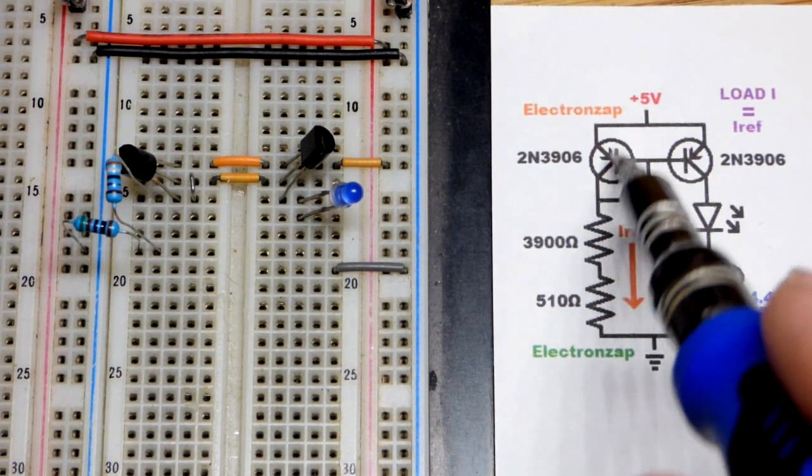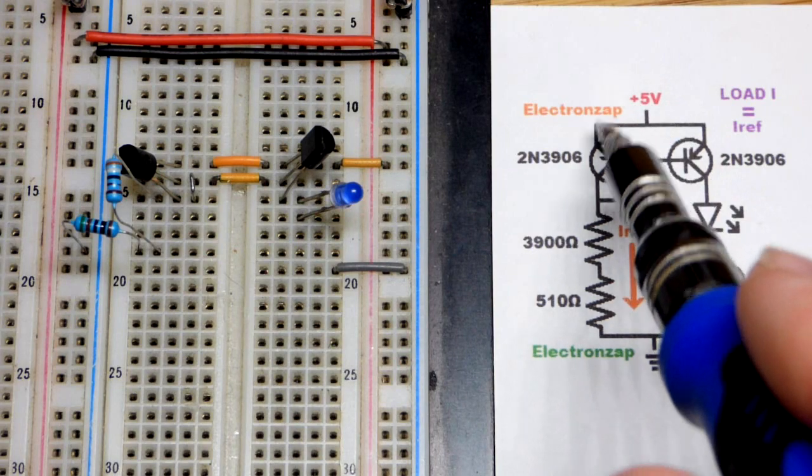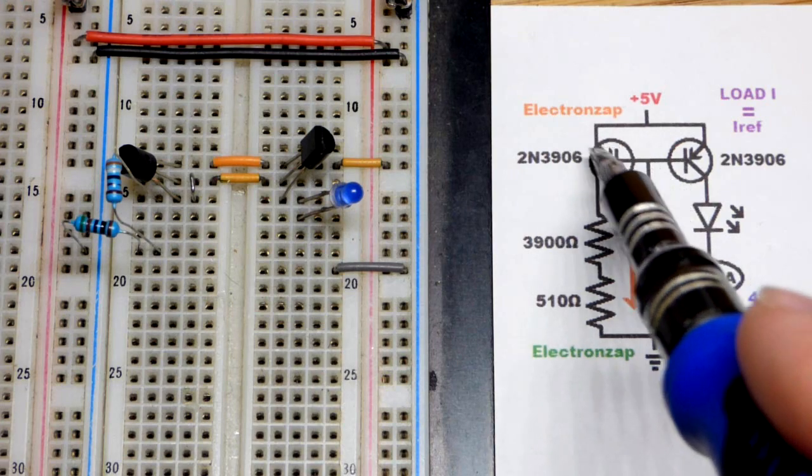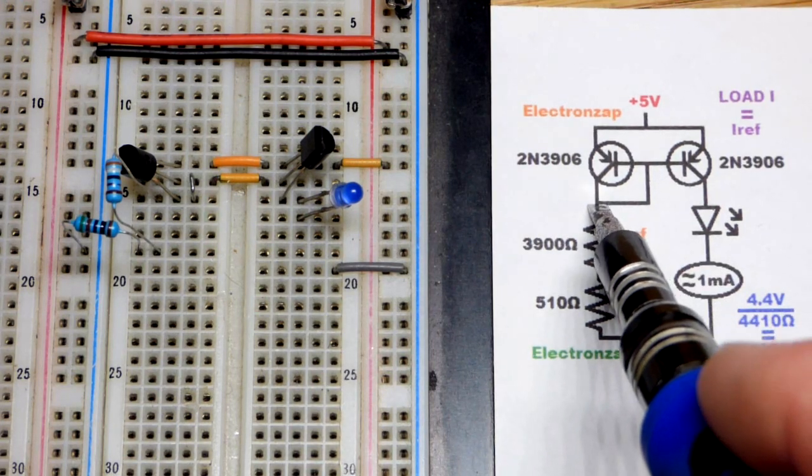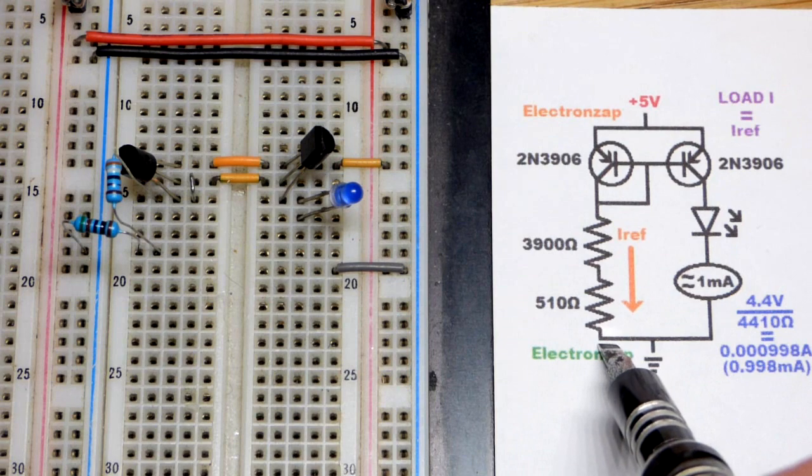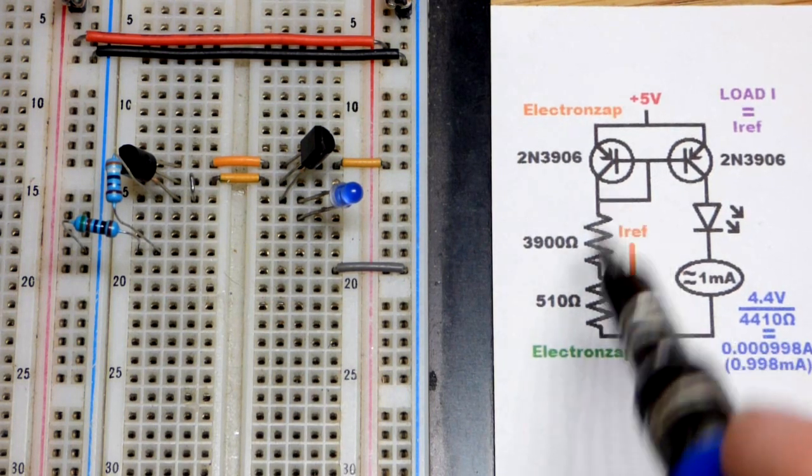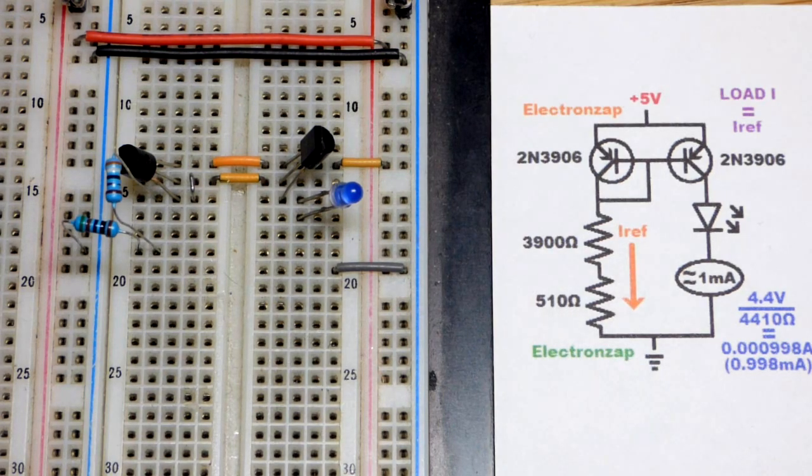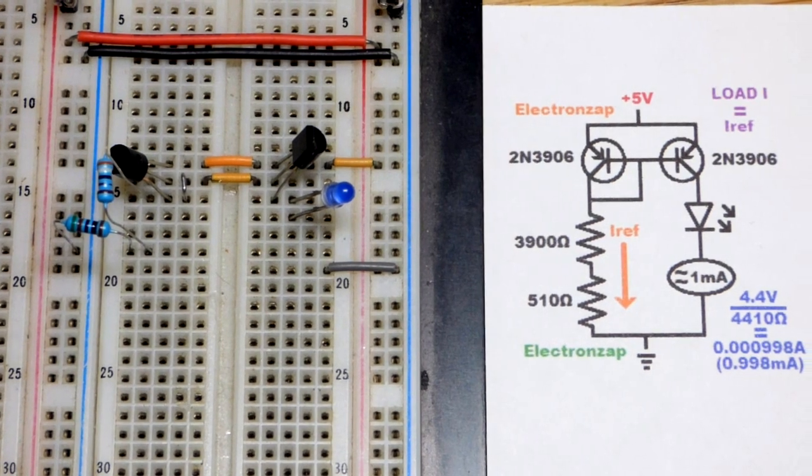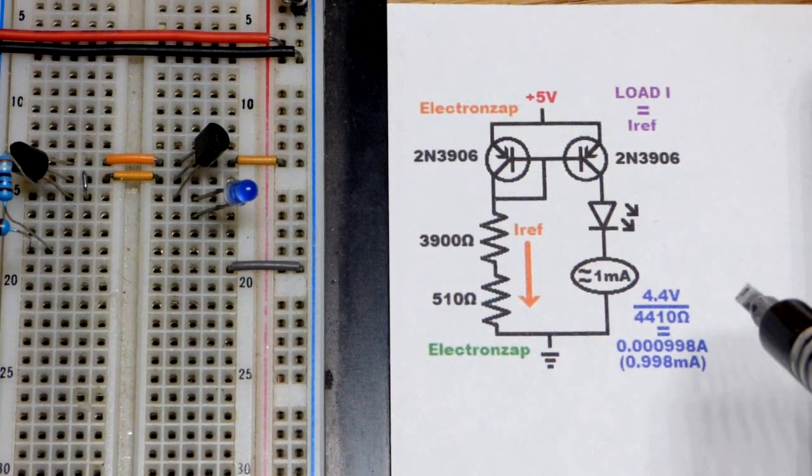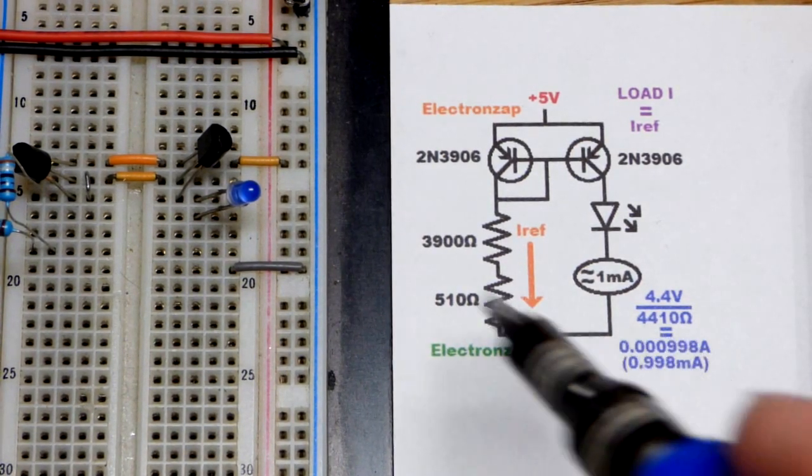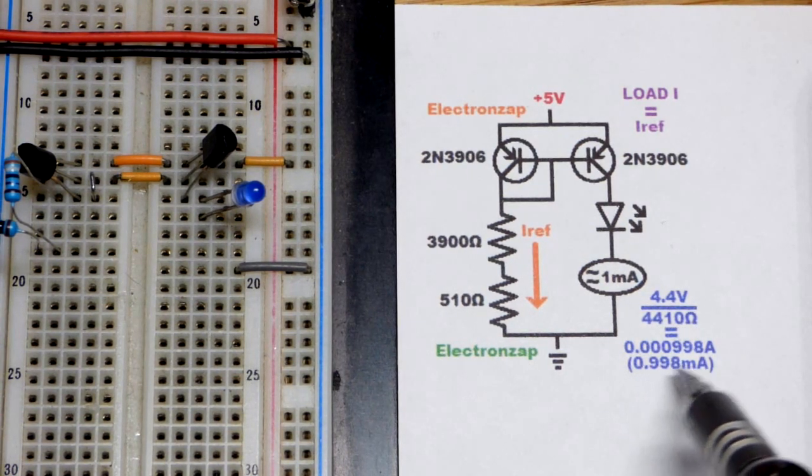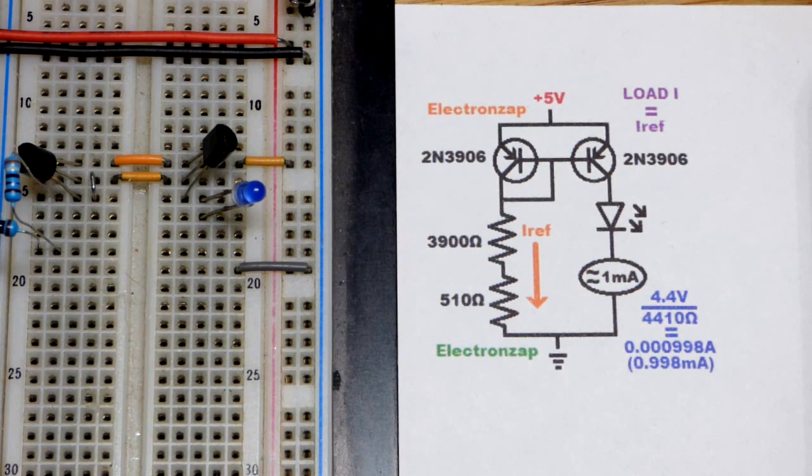But in any case we have 5 volts up there and so the emitter to base right there is going to drop about 0.6 volts, which means we'll have about 4.4 volts across those two resistors. So 4.4 volts divided by 4,400 ohms would be 1 milliamp of current, 0.001 amp. But I did the math here for the two values you see right there. So 4,410. And there you can see just slightly less than 1 milliamp of current.